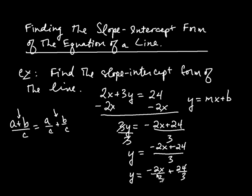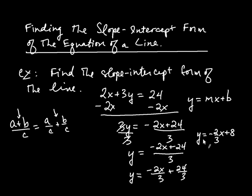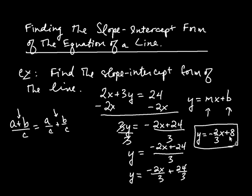Finally, we take the negative 2 over 3 and separate it from the x. And 24 divided by 3 is 8, so our answer is y equals negative 2 over 3 times x plus 8. Notice we have written the line in the form y equals mx plus b — m is negative 2 over 3, and b is positive 8.